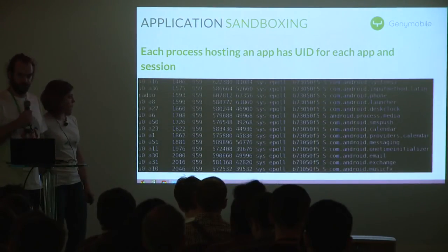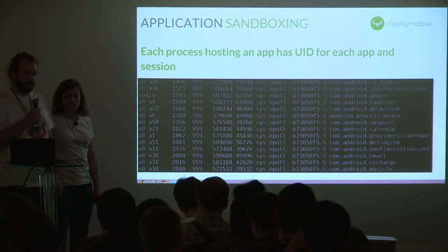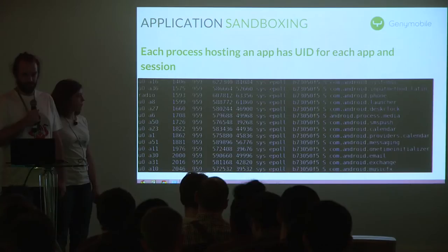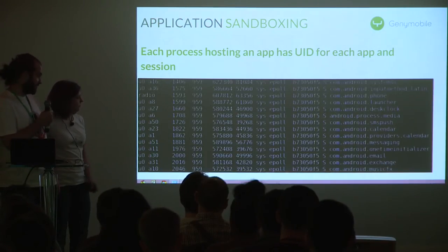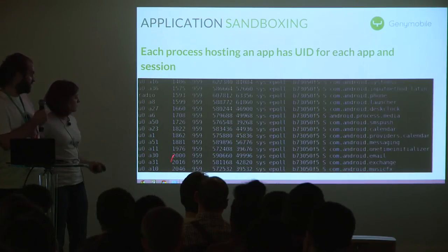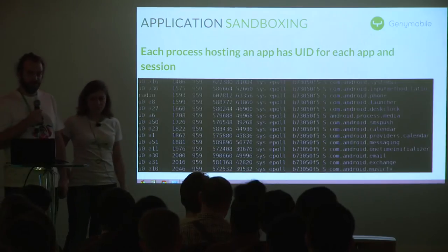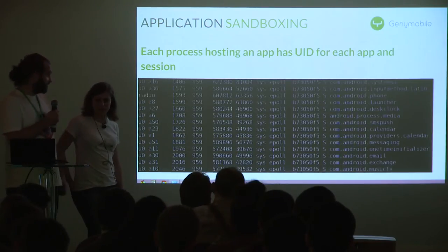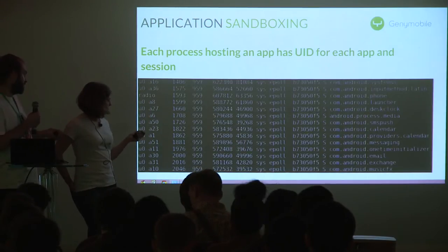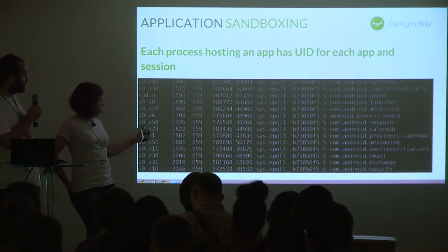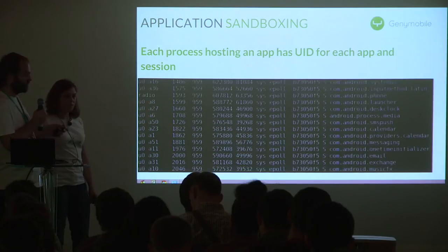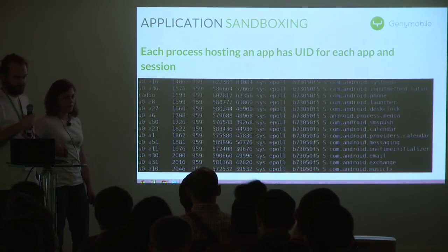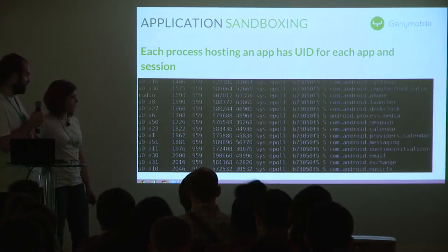In this process list extract, you can see processes which are actually application processes. On the right side is the package name, and on the left side you get the UID — in string representation this time. We can see that each UID is different for all applications. We can also guess that multi-user is in play there, because we see U0 something, which means user owner — the natural user of the Android device.